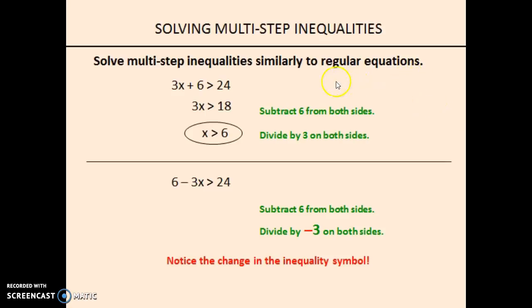The first one is really quite simple and straightforward. If we start with 3x plus 6 is greater than 24, our first step would be to get rid of this 6. We will subtract 6 from both sides. Then we have just 3x over here, and on the other side we have 24 minus 6, which is 18. Now, we have to divide by 3 on both sides, and we end up with x is greater than 6. That means that any number greater than 6 will solve this inequality.